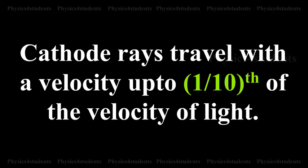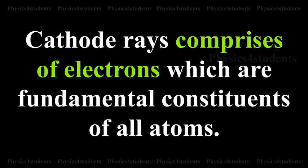Cathode rays travel with a velocity up to one-tenth of the velocity of light. Cathode rays comprise of electrons which are fundamental constituents of all atoms.